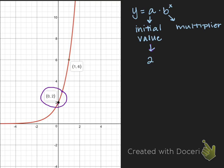In order to find our multiplier, we want to identify the next consecutive point, which in this case is (1,6).